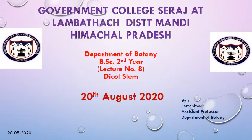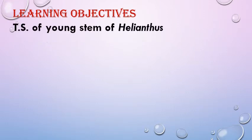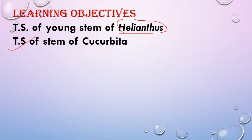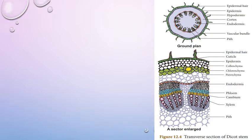Good morning everyone. Today we will discuss the dicot stem and dicot root. Our learning objectives are: we will study the TS of dicot stem — specifically Helianthus sunflower stem — and the TS of stem Cucurbita. In addition, we will discuss the TS of dicot root.